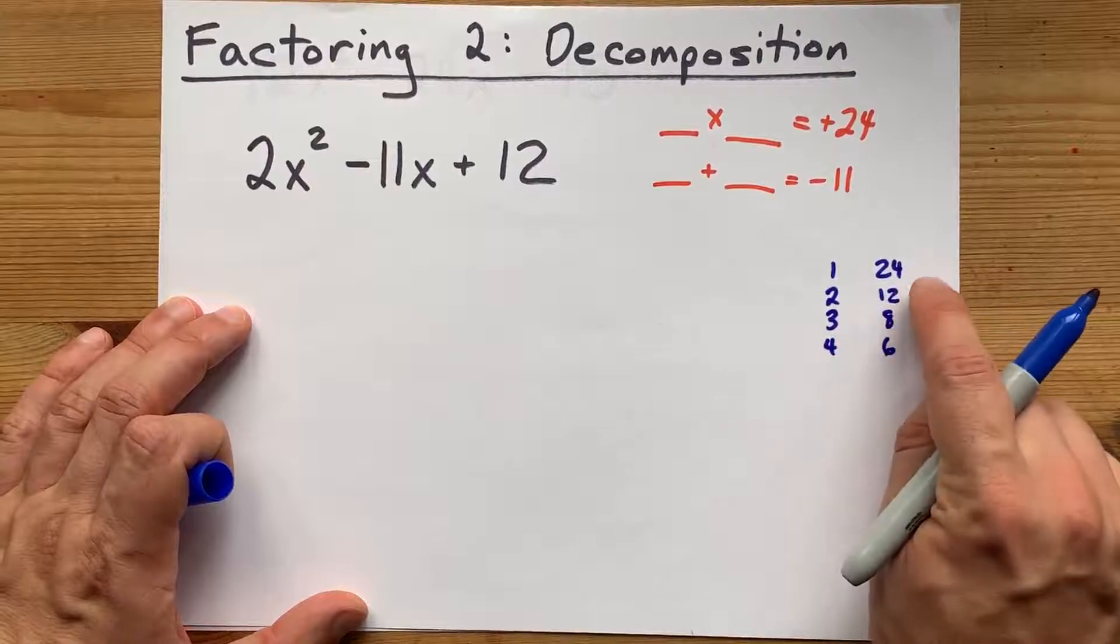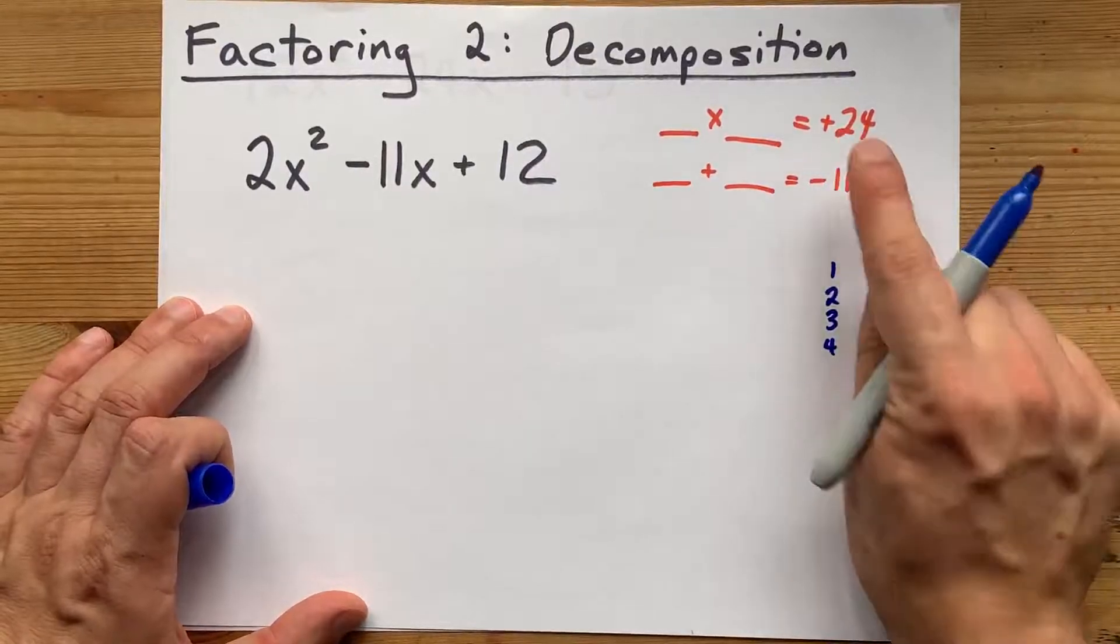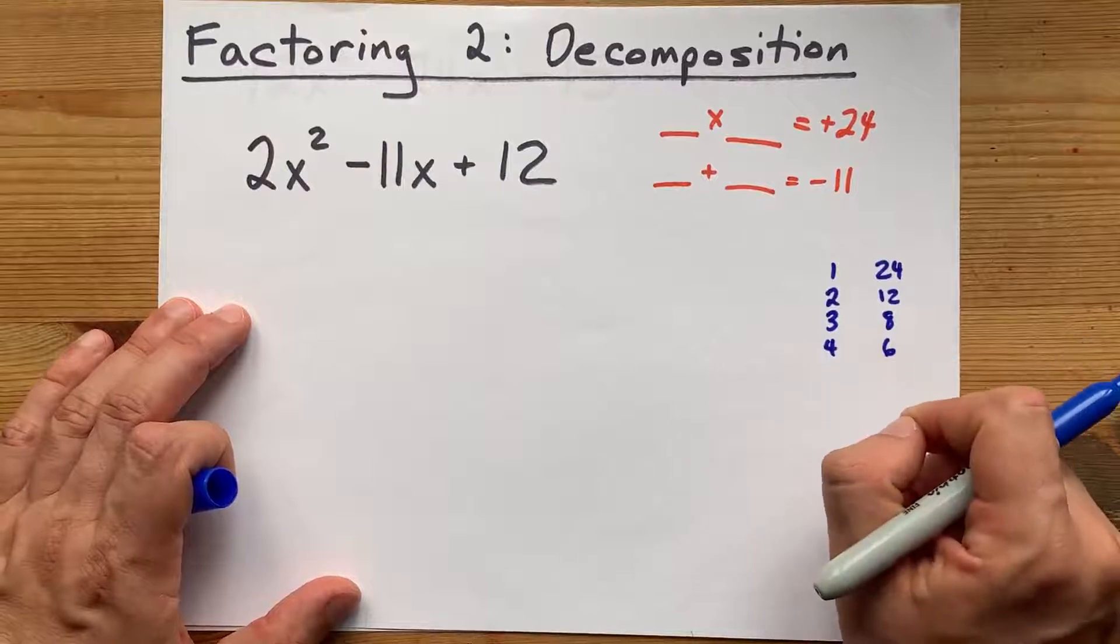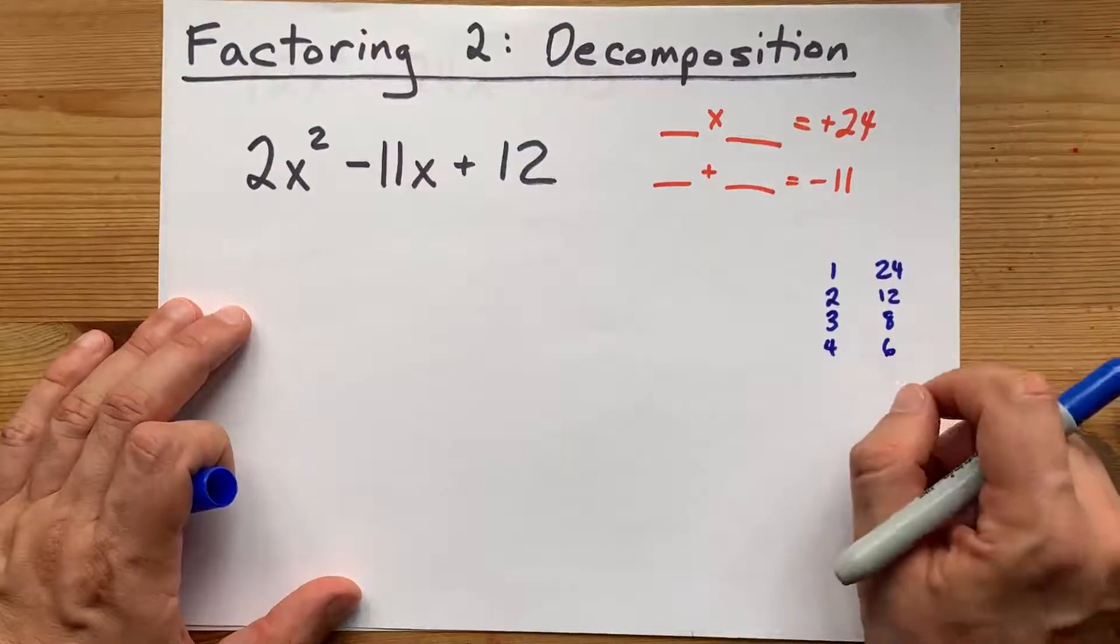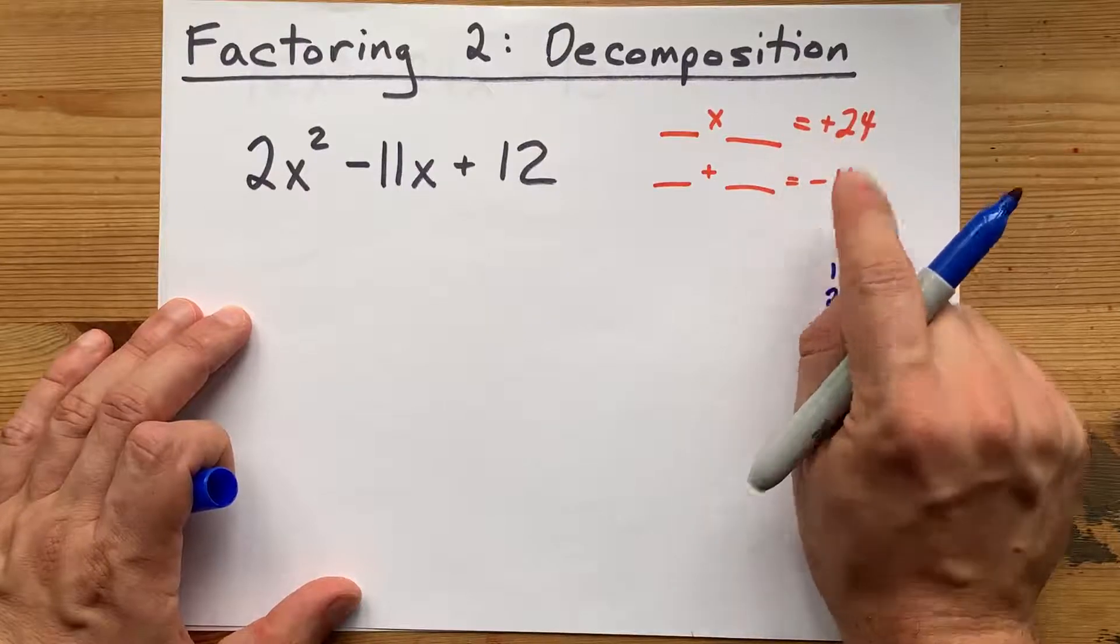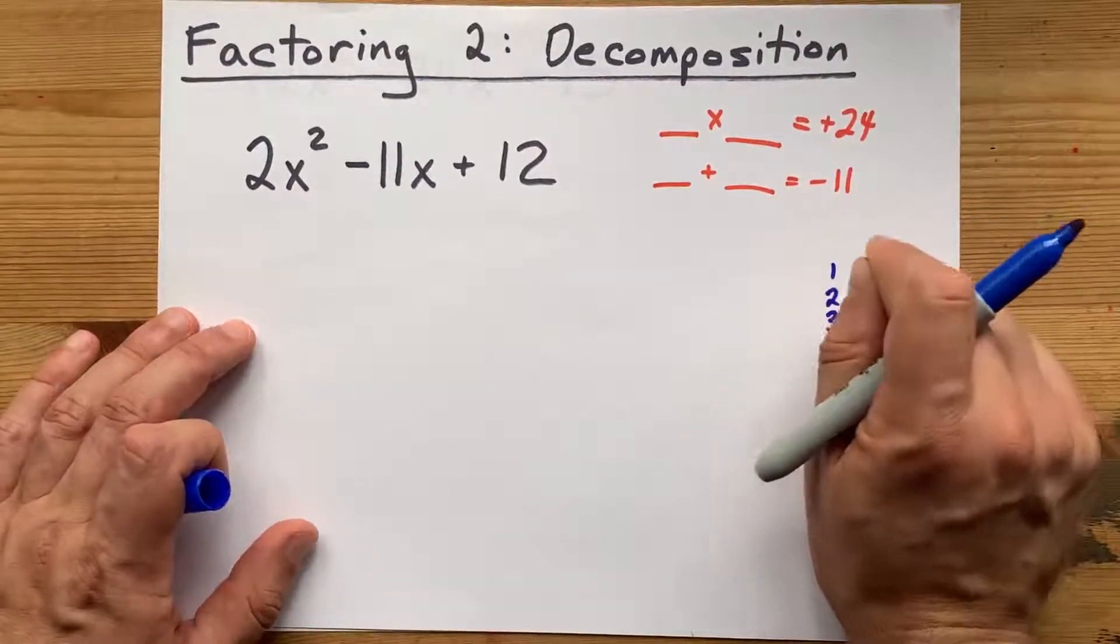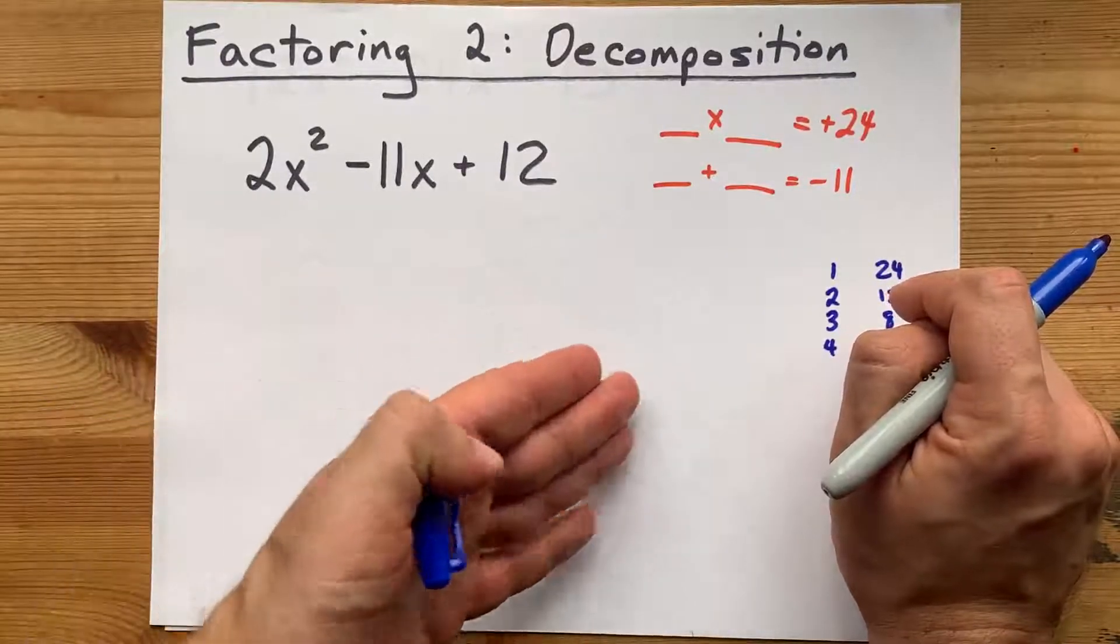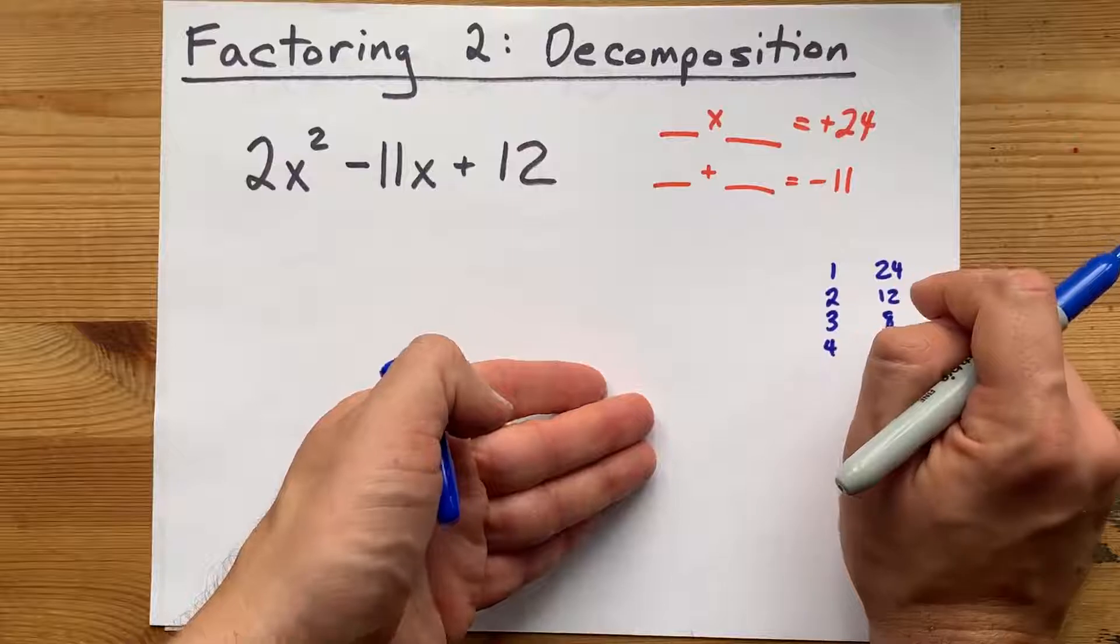Now those all multiply to give me 24, which is good, but none of them add to give me negative 11, mostly because none of them are negative. Now, they have to multiply to a positive. So I know that their signs have to match. Two negatives will multiply to give me a positive, and two positives will multiply to give me a positive.